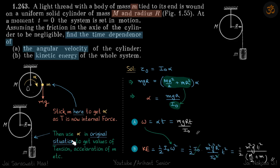This approach is used whenever a mass hangs by a thread from a pulley — we simply replace that mass onto the pulley itself to immediately get alpha. That initial alpha remains constant even as mass m slides down, so we can then apply it to the original situation to find all other values. We will repeatedly use this approach in the next problems.